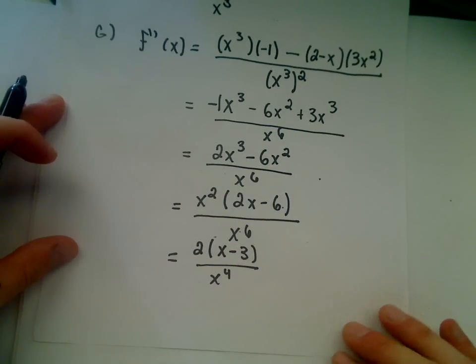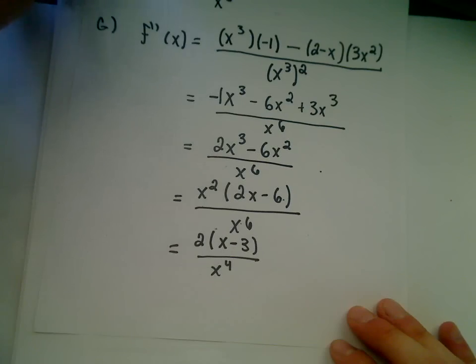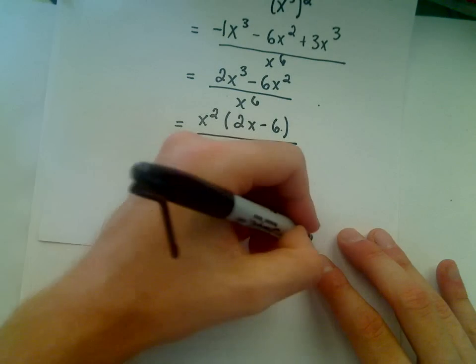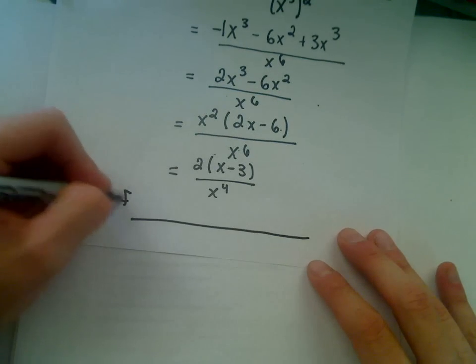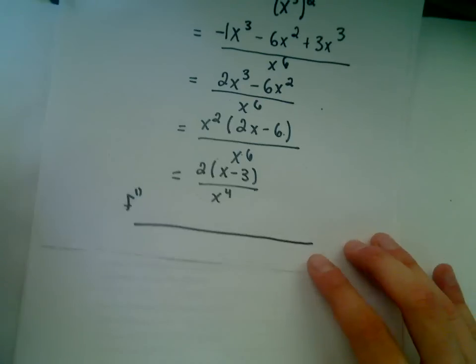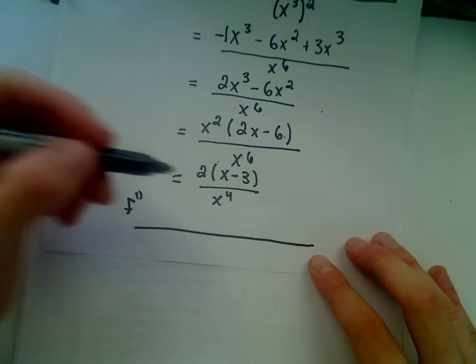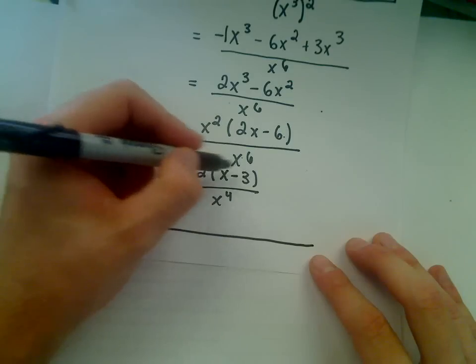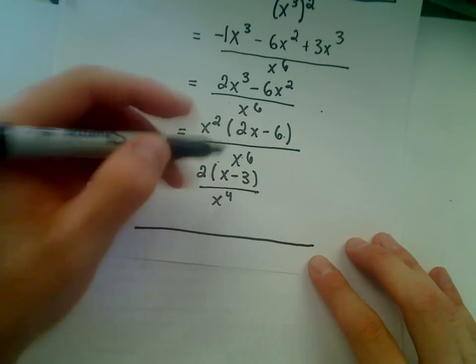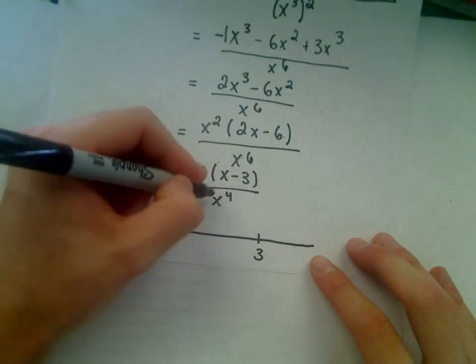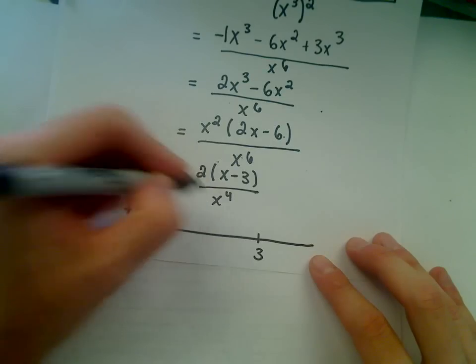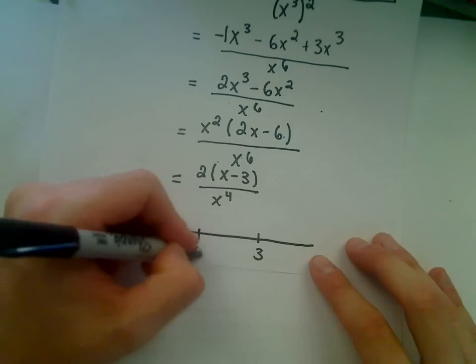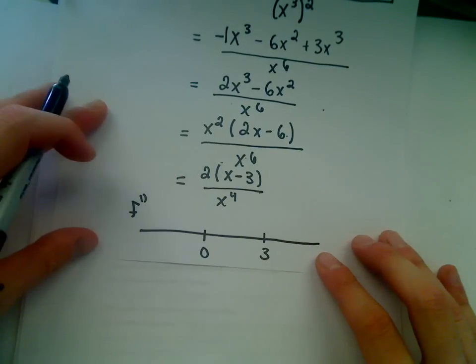And again, now we basically just need to do the same thing that we did before. We only call them critical numbers for the first derivative, but you still make this little sign chart for the second derivative and do the same thing you did a second ago. So I think, what value will make the numerator 0? Well, how about x equals 3? What value would make the denominator 0? How about x equals 0? Same thing.